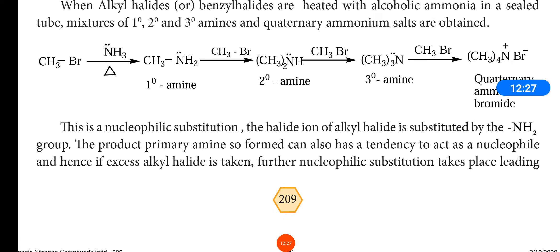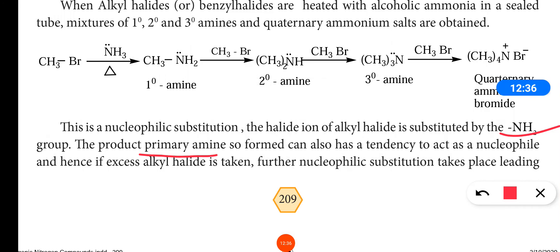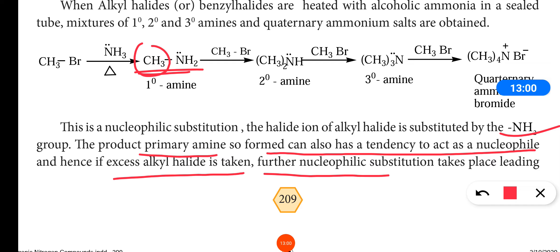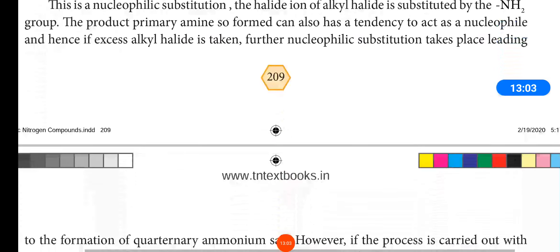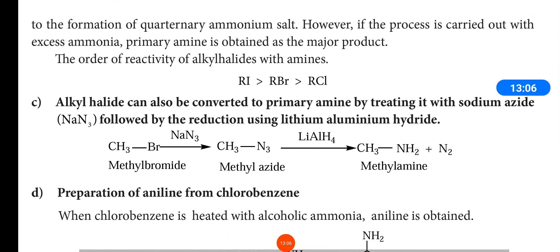This is a nucleophilic substitution reaction. The halide ion of alkyl halide is substituted by the NH2 group. The primary amine formed can also act as a nucleophile. If excess alkyl halide is taken, further nucleophilic substitution takes place, leading to the formation of secondary and tertiary amines, and also quaternary ammonium salt.